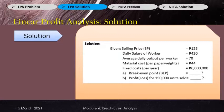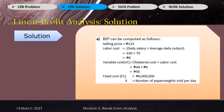Upon computing the break-even point, we use two formulas. Labor cost equals daily salary divided by average daily output. Our daily salary is 420 pesos and average daily output is 70, so 420 divided by 70 equals 6 pesos. So 6 pesos will be our labor cost, which will be added to the material cost to get the variable cost.